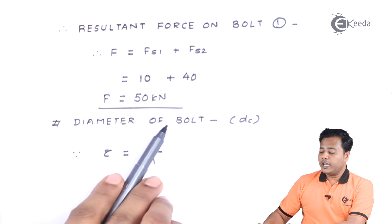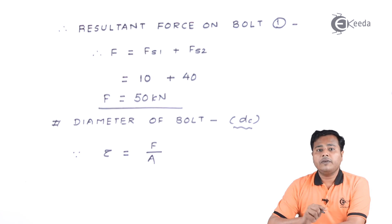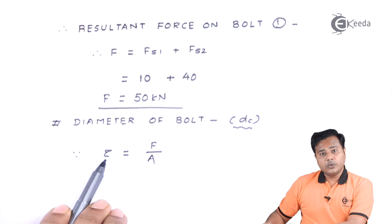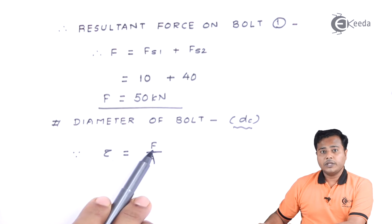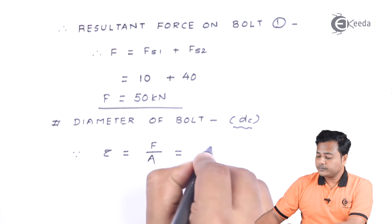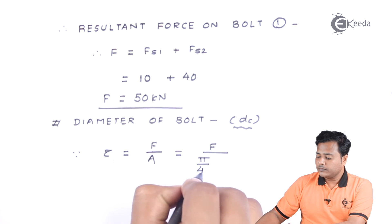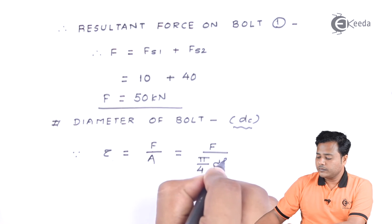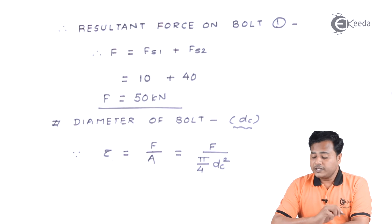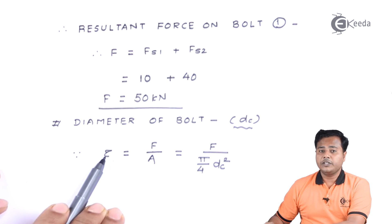Now let us find the bolt diameter. We generally find the core diameter DC first. The direct shear stress formula is the applied force divided by the area of cross-section, giving the expression with pi over 4 times DC squared.